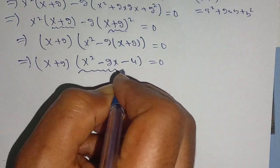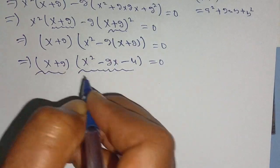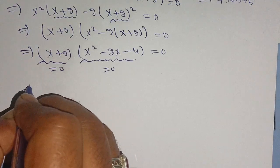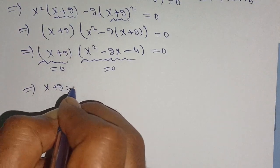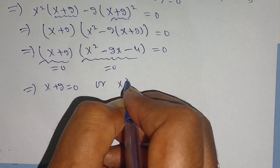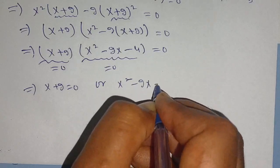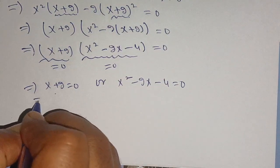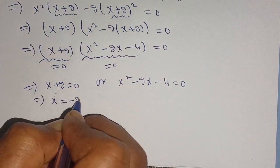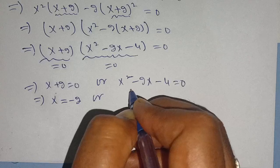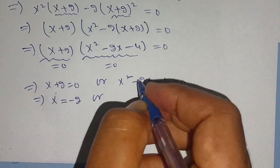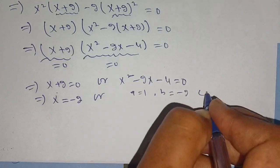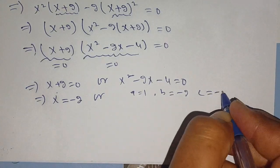As this is a quadratic equation, equating both terms to 0 we get: x plus 2 is equal to 0, or x squared minus 2x minus 4 is equal to 0. From the first term we get x is equal to minus 2. For the quadratic, a is equal to 1, b is equal to minus 2, and c is equal to minus 4.